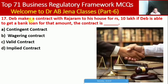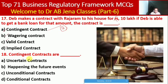Next MCQ: suppose Dev makes a contract with Rajaram to sell his house for Rs. 10 lakhs if Dev is able to get a bank loan for that amount. This contract is what type? Whether contingent contract, express contract, valid contract, or implied contract. Here A is the right option — it is a contingent contract. Contingent contracts are conditional contracts by nature.